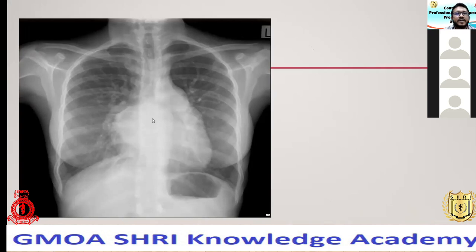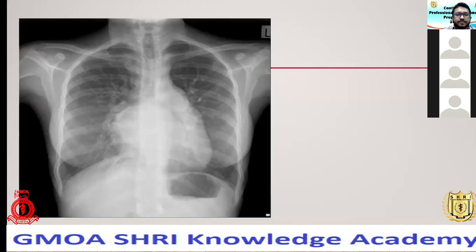Another mediastinal abnormality: the airway is fine, but the main bronchi are splayed and widened — something is between the carina and the heart. There is apparent double shadowing of the heart and widening of the left atrial appendage along the left heart border. This is left atrial hypertrophy.